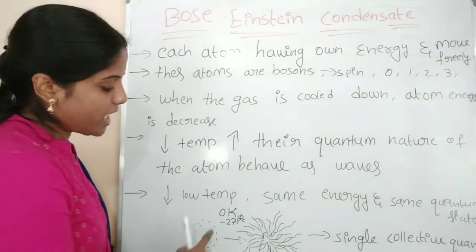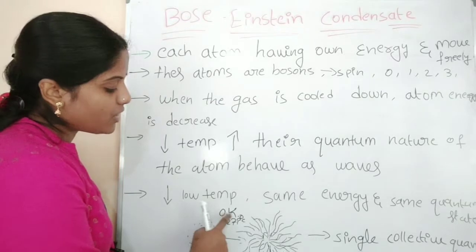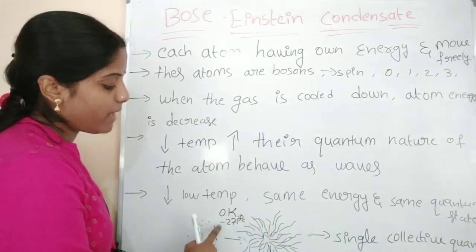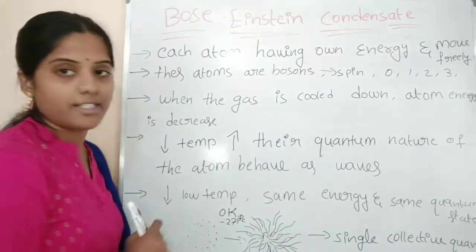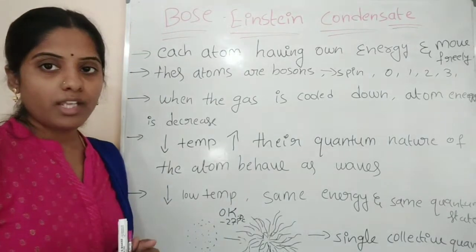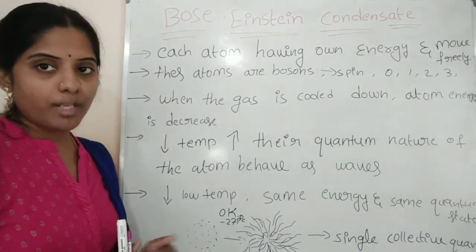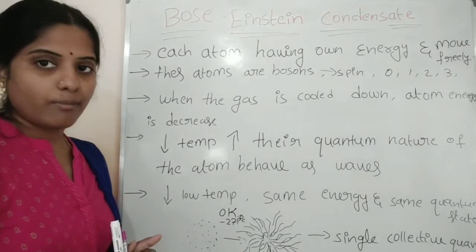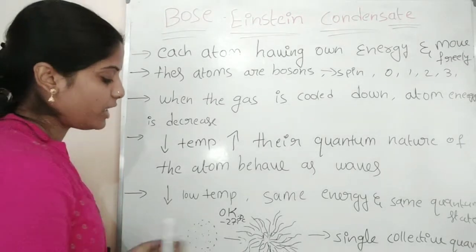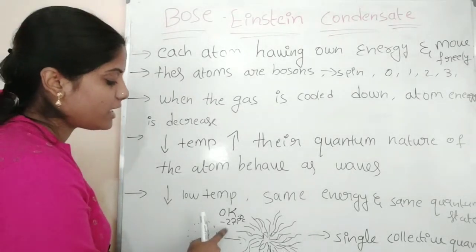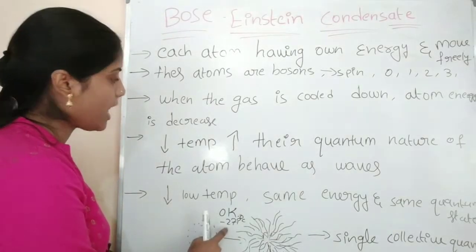This occurs at absolute zero Kelvin, which is minus 273 degrees Celsius. Is this temperature actually achievable? No, it is impossible to reach in nature. It is only possible in laboratories.